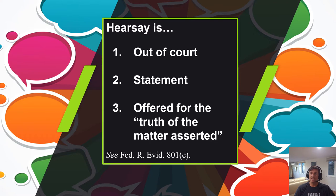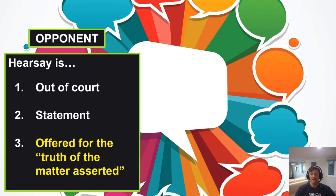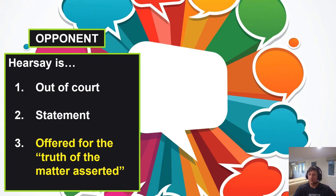When I say objection hearsay as the opponent, I'm saying they're doing something that meets this definition: it's an out-of-court statement and they're offering it for that bad purpose — to prove what's in quotes. Now let's talk about what the proponent might say in response. Anytime someone stands up and says objection hearsay, that means they're asserting the 801(c) definition of an out-of-court statement offered for the truth of the matter asserted. The proponent has to disengage from the witness, turn to the court, and respond.